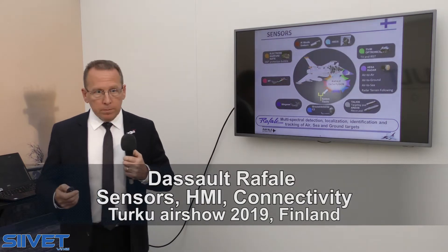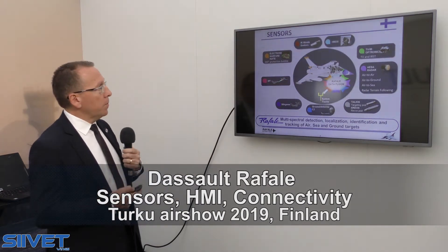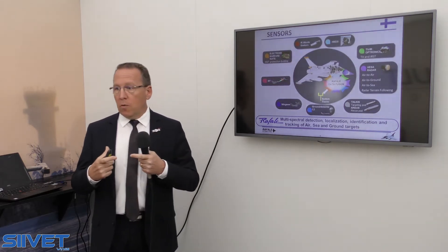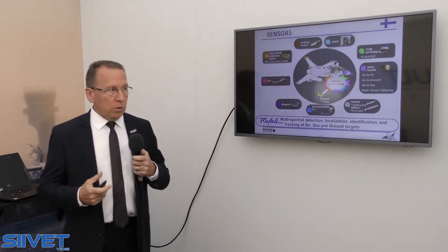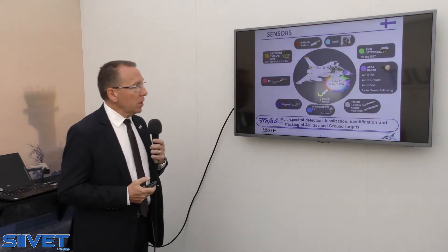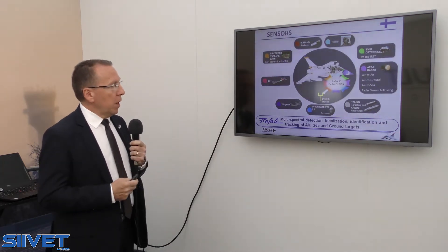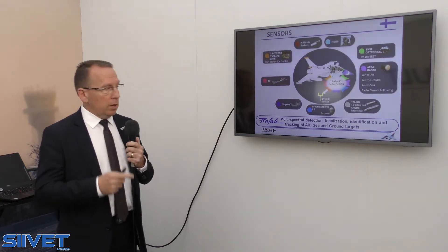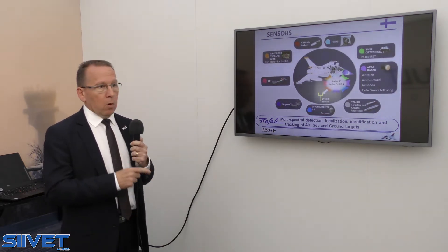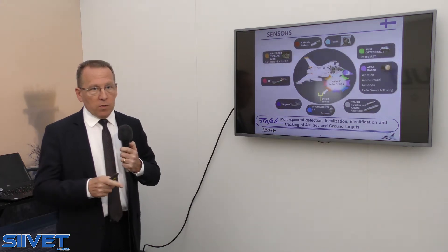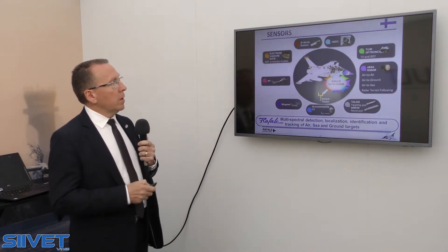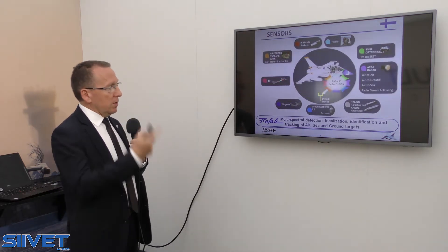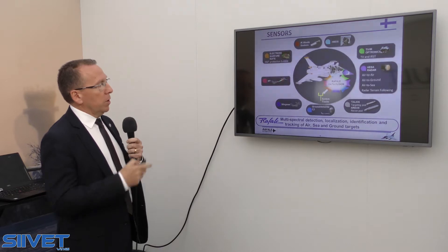That was the platform. But inside the platform, the pilot needs to build and have a very clear situational awareness. We provide the pilot with a multi-spectral detection, localization, identification, and tracking of all the targets — air, surface, and ground. All this information comes from the different systems you can see all around the middle circle.